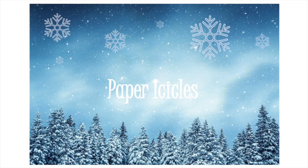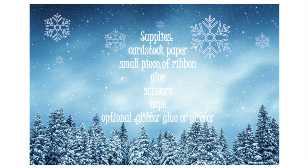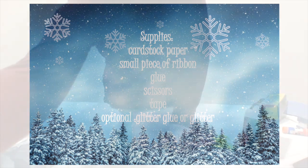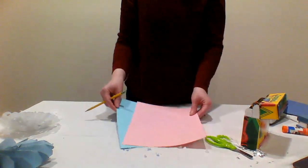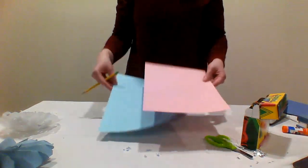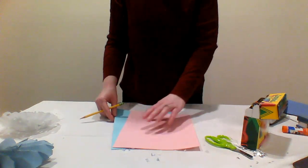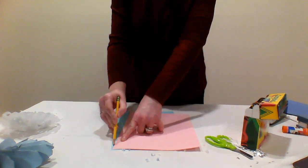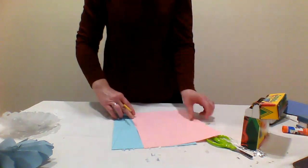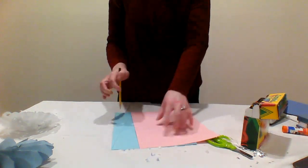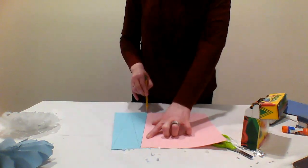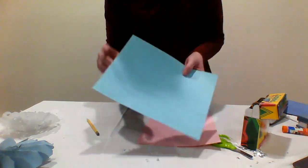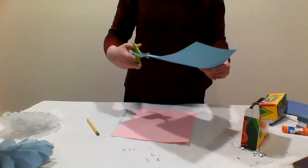The fifth craft is paper icicles. For this craft you'll need some cardstock or paper, a small piece of ribbon, glue, scissors, tape, and if you have some glitter or glitter glue. On a piece of cardstock or paper, draw some tall triangles with a base of about one to two inches wide. Cut out two of these long triangles.